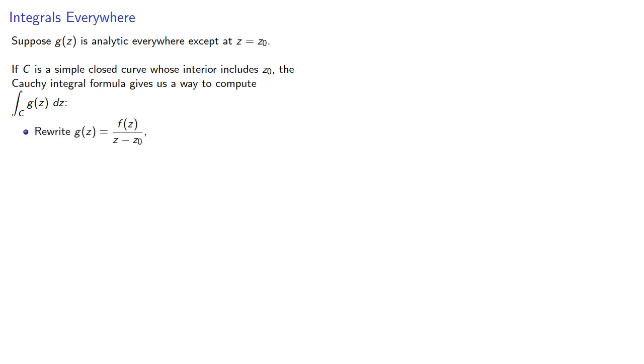We can rewrite g as f over z minus z0, in effect factoring out the bad point. If f is analytic everywhere inside c, then the Cauchy integral formula applies, and the integral can be evaluated by finding f.